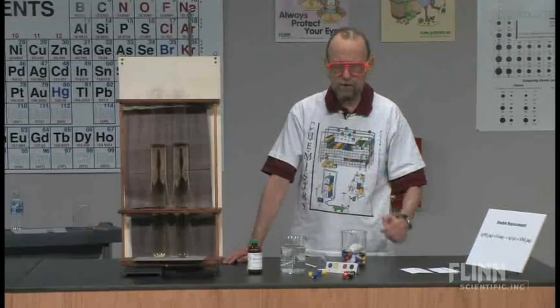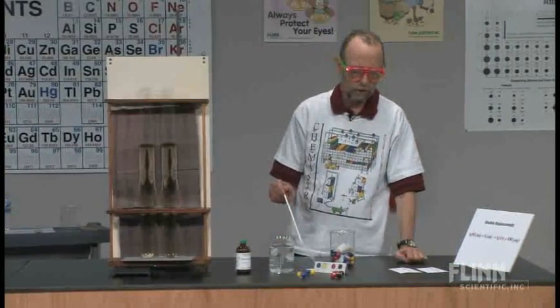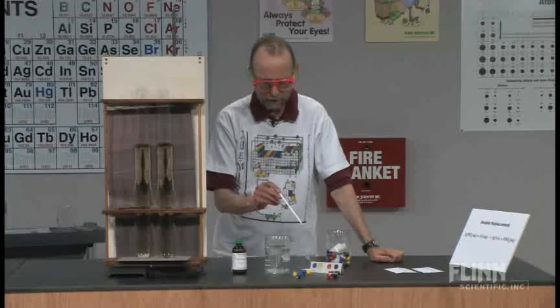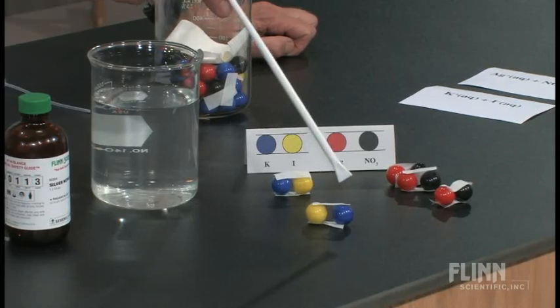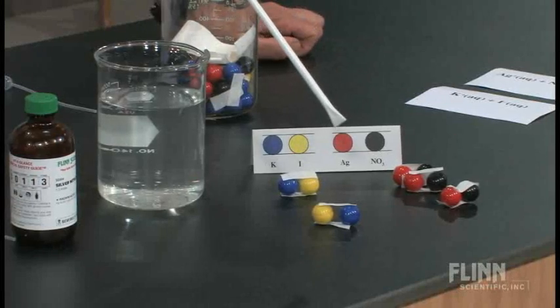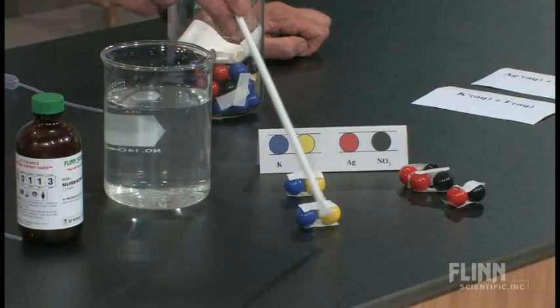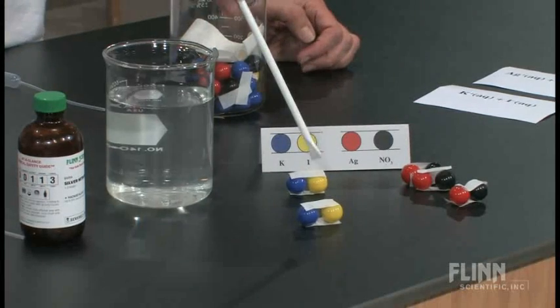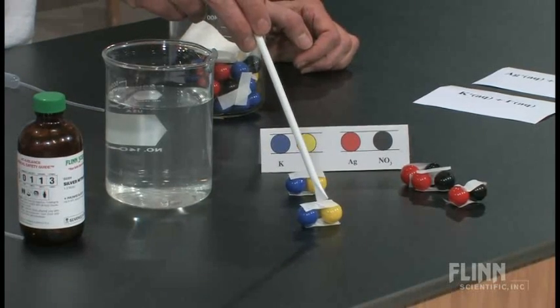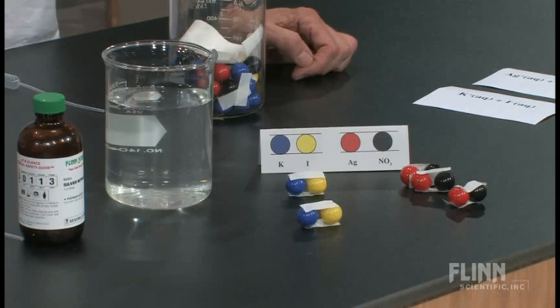Now what we did was we took some solid potassium iodide. That would be represented by this model right here. Potassium is the blue one, the yellow one is going to be our iodide. So this is just a model, and this is a bond, if you will, this piece of paper that holds it together.